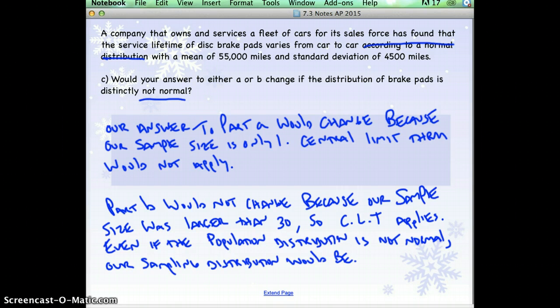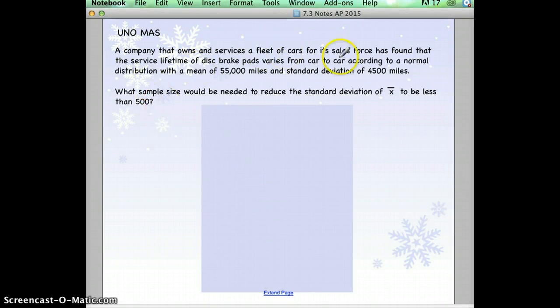Okay. Next question. Same information at the top. Here's where it's different. What sample size would be needed to reduce the standard deviation of x bar to be less than 500? This is almost identical to the last question we did in class yesterday. It's just that the formula is different. The standard deviation of x bar is equal to the population standard deviation divided by the square root of n. Well, we need to solve for n, so let's put stuff in. We want our standard deviation to be less than 500 and our population standard deviation is 4,500 and we need to figure out what n should be.